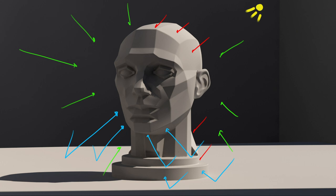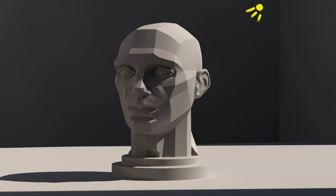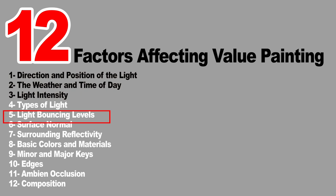We won't have separate master artist examples for light bounces since we already saw many in the first part of the video. Light bouncing isn't a factor by itself but a result you get from most of the other factors. Any light you use, any material you use, any surrounding area you use will affect the amount of light bounces, which will result in different values around your painting.